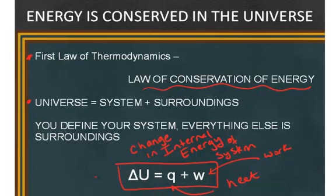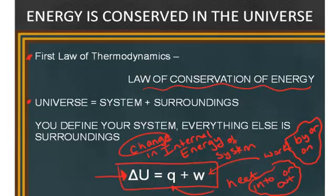However, we can look at the change in the internal energy of a system by looking at the amount of heat that is either transferred into or out of the system and the amount of work that's done by or on the system. So work can be done by or on, and heat can be transferred into or out of. And by these two methods of energy transfer, we can then calculate the change in internal energy.